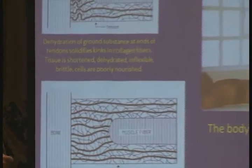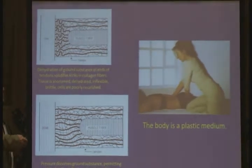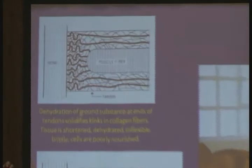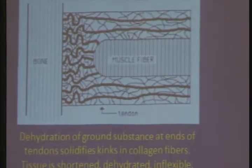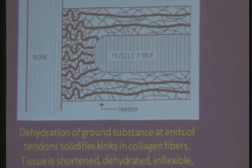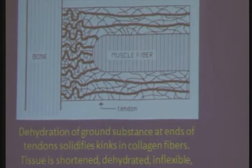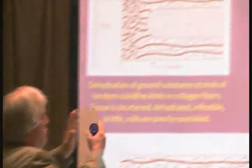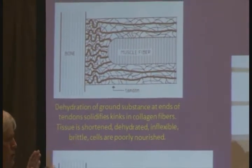Here's what happens in Rolfing, and probably in yoga and other complementary therapies: the collagen fibers can get kinked. They get dehydrated, they get dense. This happens because of holding patterns, emotional patterns, injury, and so on. They get kinked and the muscle gets chronically shortened.